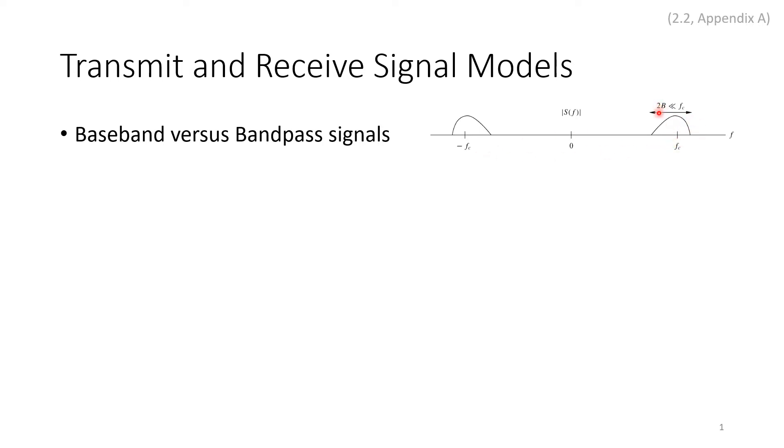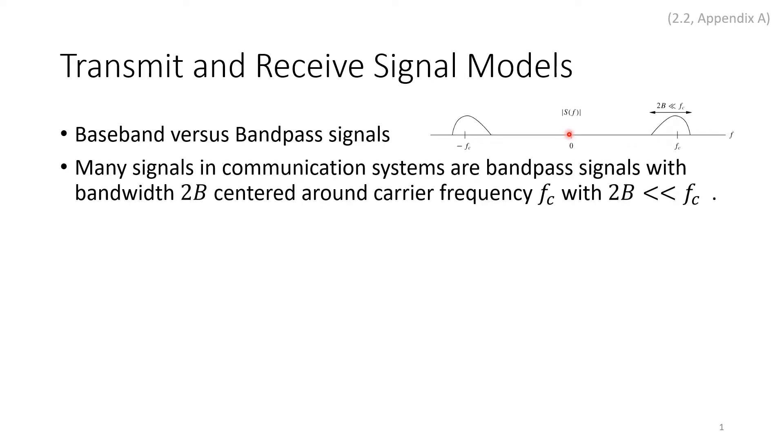The bandwidth 2B is usually much less than the carrier frequency, where B is the bandwidth of the original message. Many signals in communication systems are bandpass signals with bandwidth 2B centered around the carrier frequency.